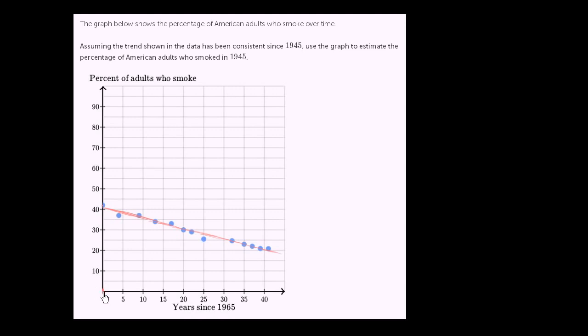Well, 1945 would be to the left of zero. So we could even think of it as if 1945 is 20 years before 1965. So let me see if I can draw that. So 20 years before 1965. This would be five years before 1965, 10 years, 15 years, 20 years before 1965. So I could even put that as negative 20 right over here. Negative 20 years since 1965. You could view it as 20 years before 1965. So that would represent 1945 right over there.